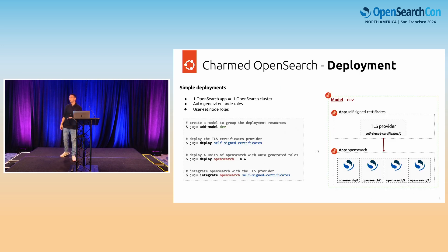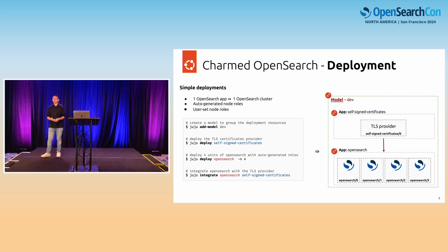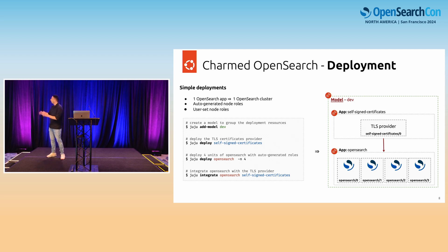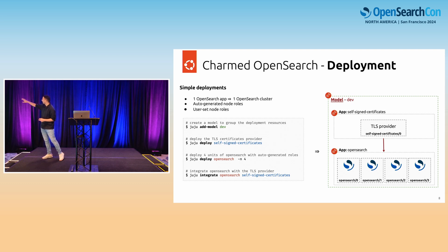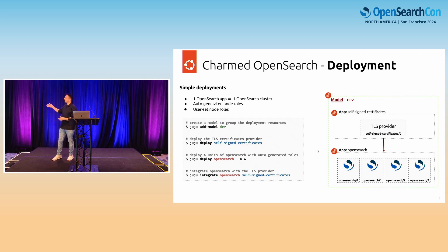For simple deployments with high availability and self-healing, one OpenSearch Juju application equals one OpenSearch cluster. We add the model dev, deploy the self-signed certificates, deploy four units of the OpenSearch operator, then integrate the OpenSearch operator with the self-signed certificate. This translates into a model called dev — a logical grouping with a TLS provider application with unit slash zero and four units of OpenSearch — and we effectively have a cluster that's up and running.